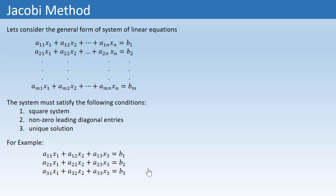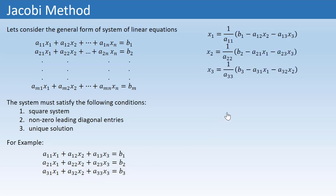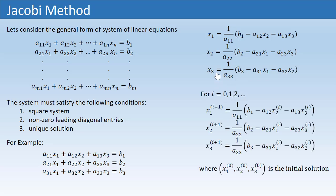The algorithm of this method says that we need to find the solution expression of the first variable X1 from the first equation, the solution expression of X2 from the second equation, and the solution expression of the third variable from the third equation. On the left-hand side we write superscript I+1, and on the right-hand side variables we write superscript I. This creates the Jacobi iterative scheme.